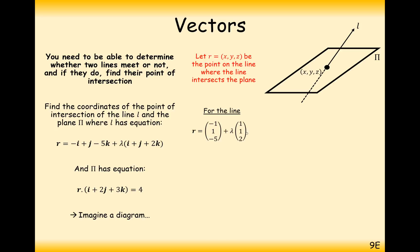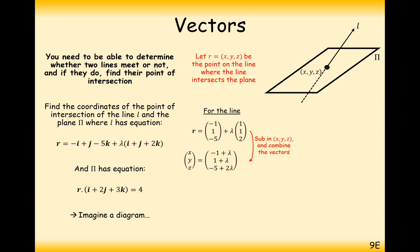The equation of the line is going to be (-1, 1, -5) plus lambda times (1, 1, 2). What we can effectively do is combine the two vectors together into a single vector that looks like this: minus 1 plus lambda, 1 plus lambda, and minus 5 plus 2 lambda. These are effectively going to be the values of x, y, and z for this coordinate, but we just don't know what value of lambda we're going to use yet.